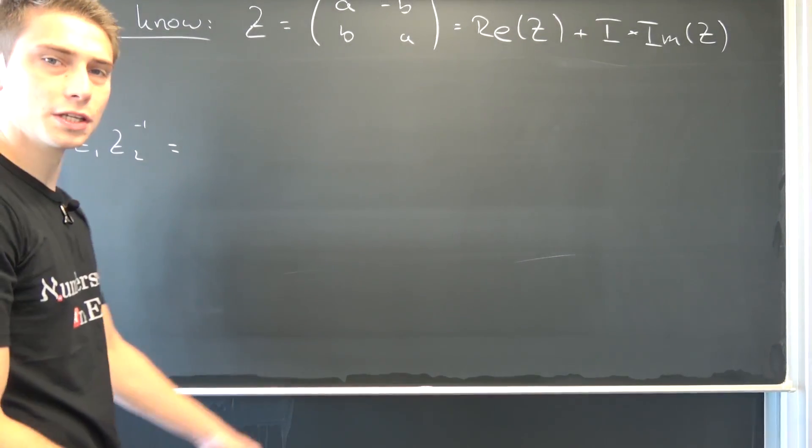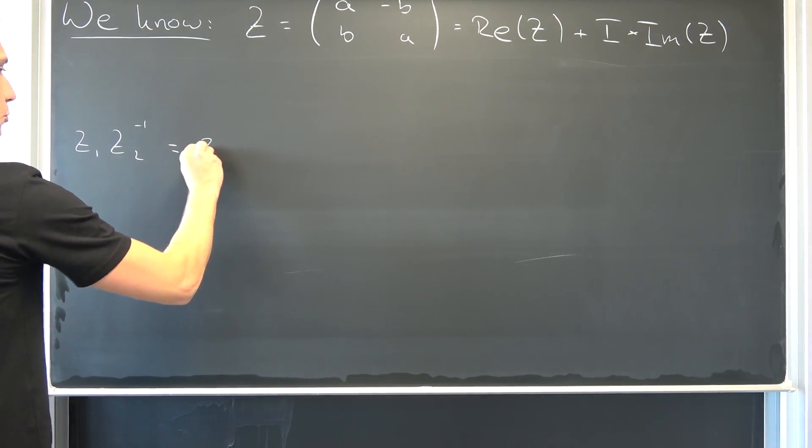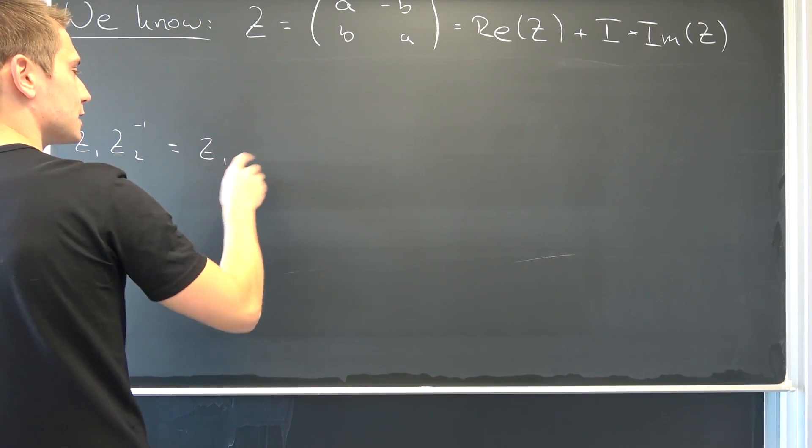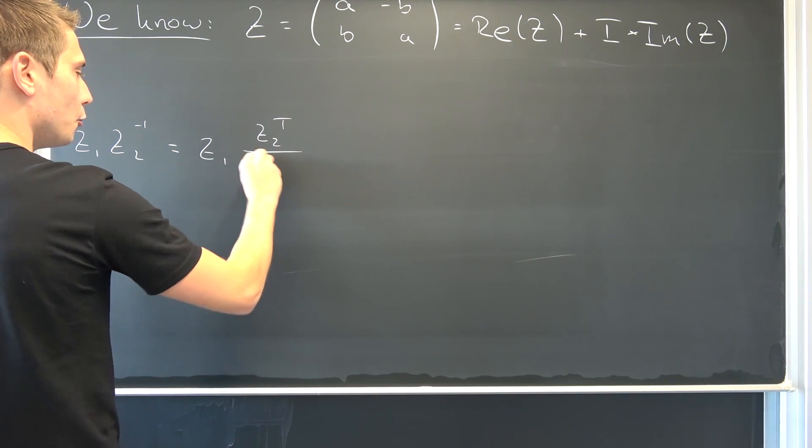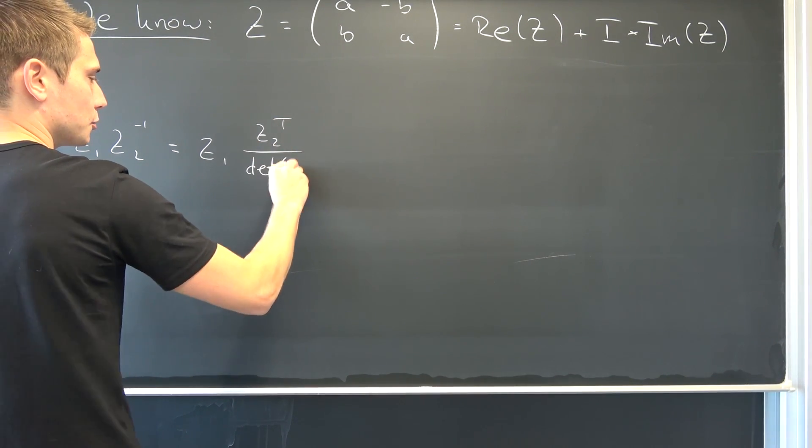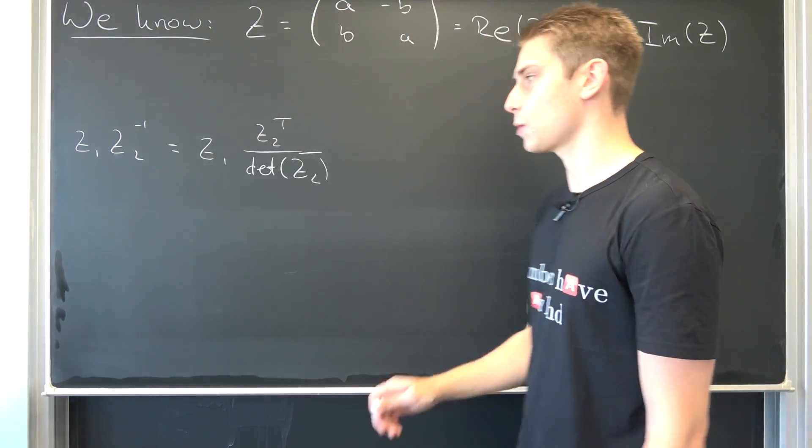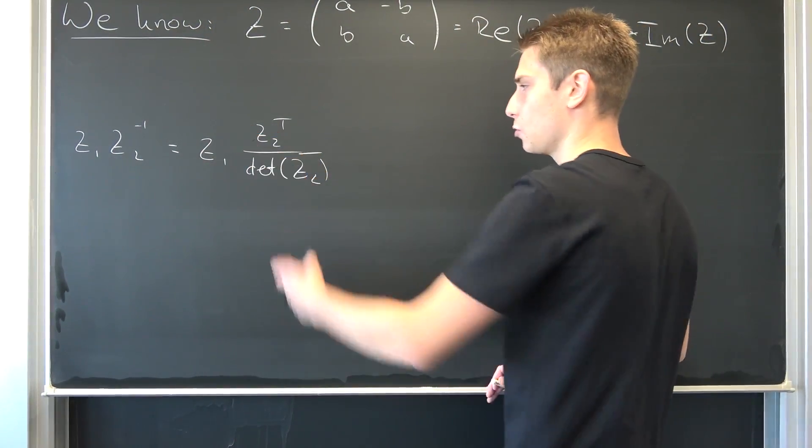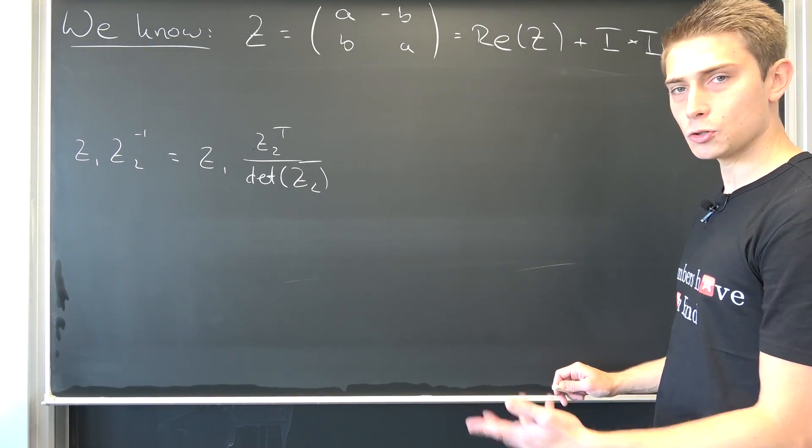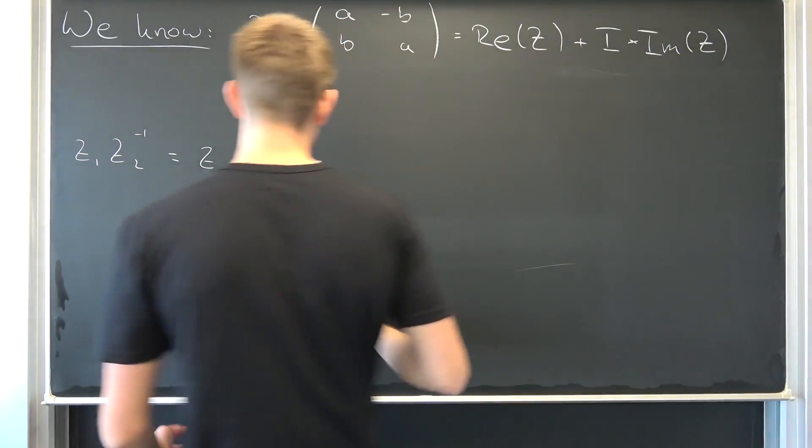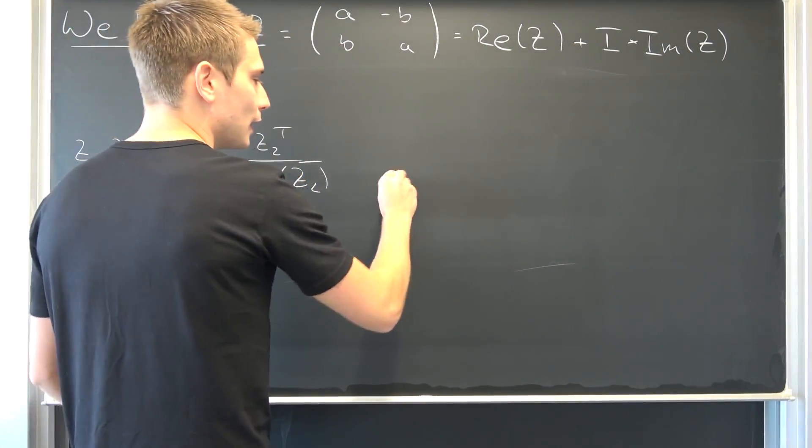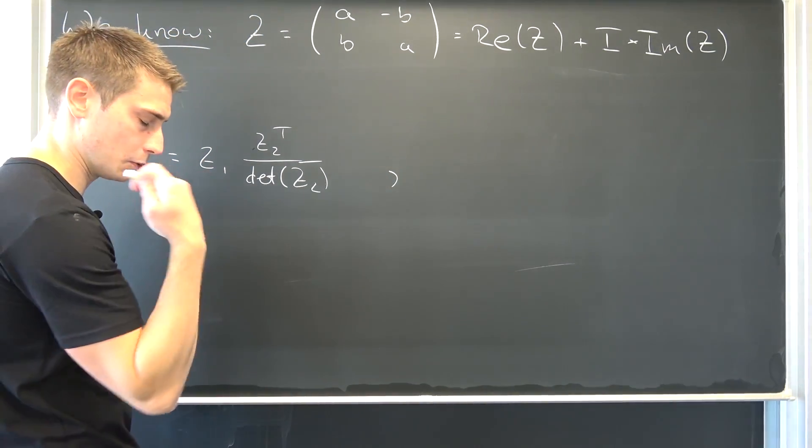And then we concluded that we are going to end up with simply z1, this is going to be preserved, times z2 transposed over the determinant of z2. And this is where I said this thing has something to do with the complex conjugate. I'm going to write it out yet again, the z2 transposed, and then we are going to talk about our boy the conjugate.